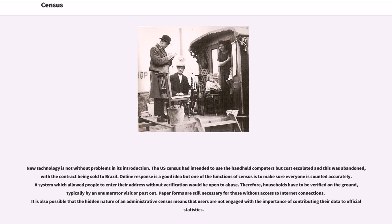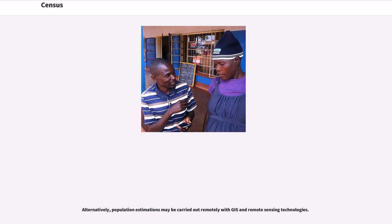A system which allowed people to enter their address without verification would be open to abuse. Therefore, households have to be verified on the ground, typically by an enumerator visit or post out. Paper forms are still necessary for those without access to internet connections. It is also possible that the hidden nature of an administrative census means that users are not engaged with the importance of contributing their data to official statistics. Alternatively, population estimations may be carried out remotely with GIS and remote sensing technologies.